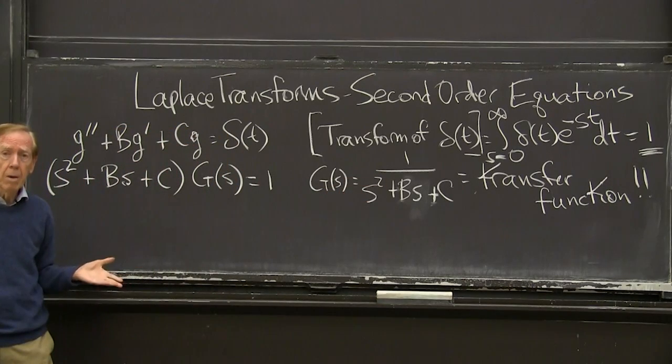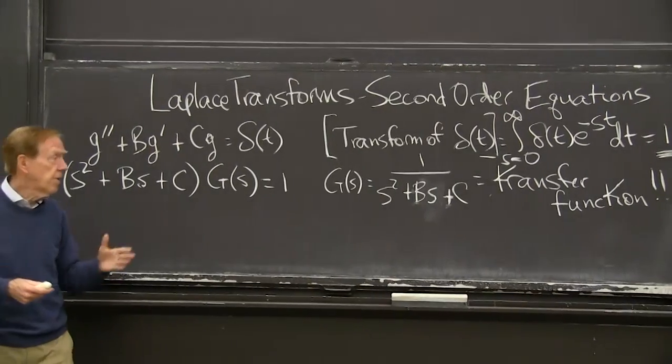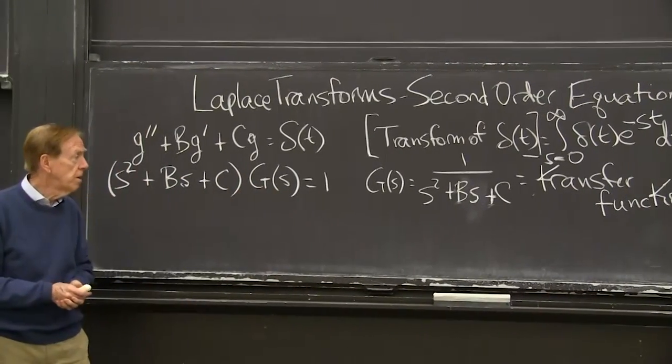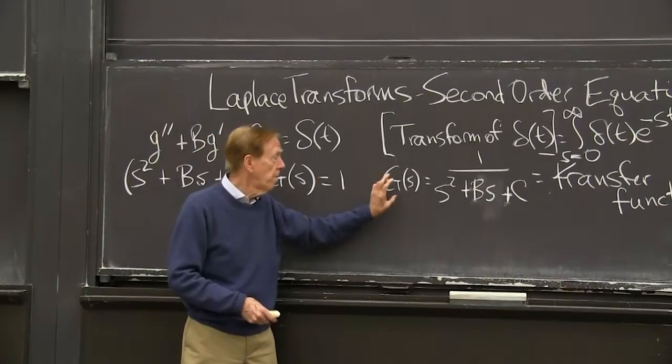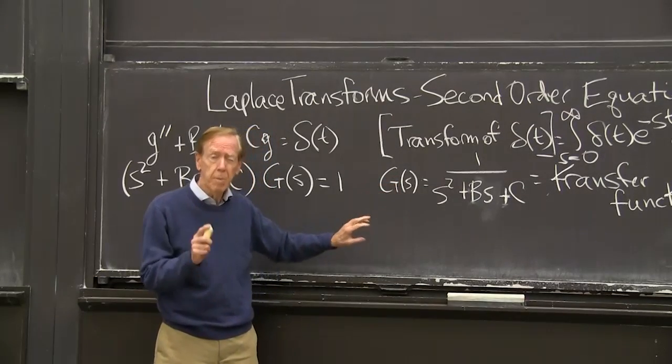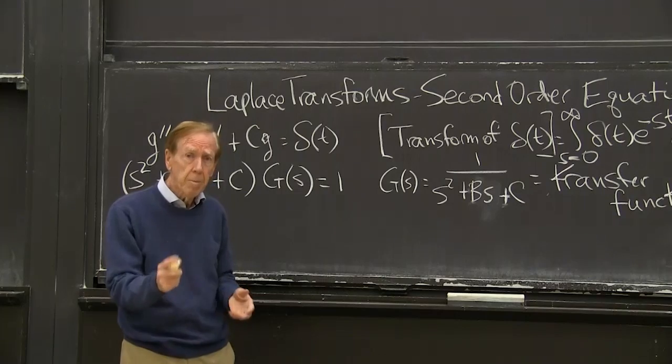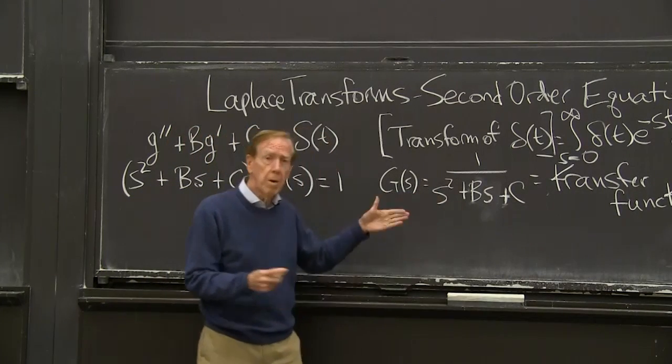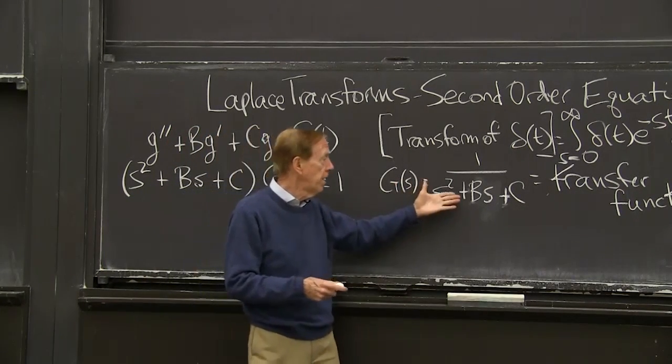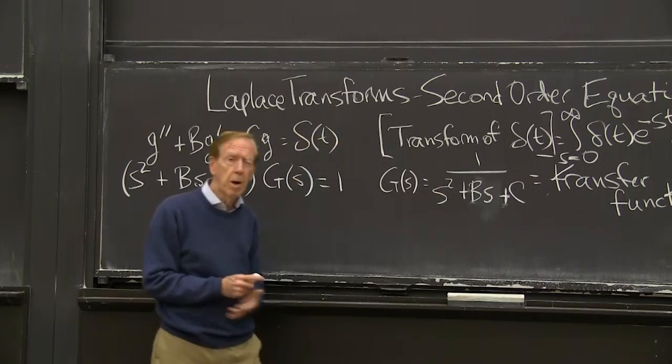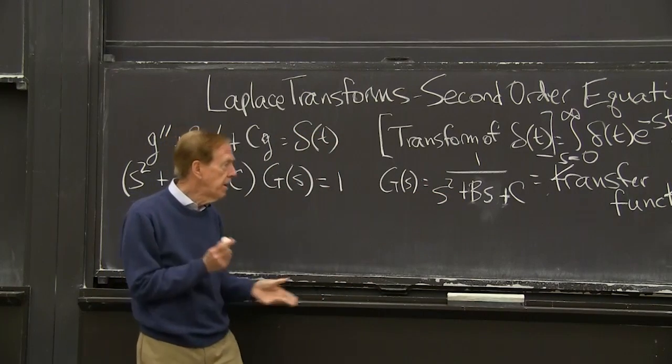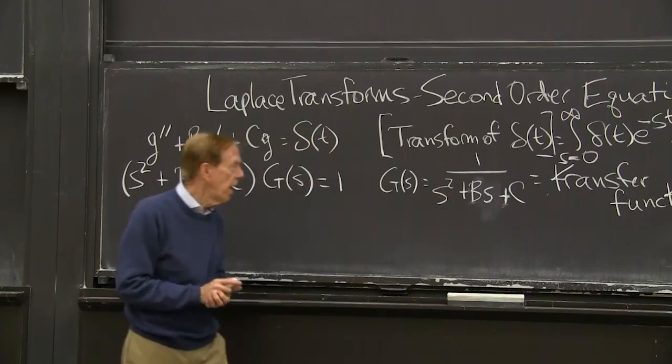So now I've taken the transform of the equation. I've got the transform of little g, the impulse response. So now I'm ready to find g, the impulse response by invert Laplace transform. How do I find the function with that Laplace transform? Right now, it's 1 over a quadratic.